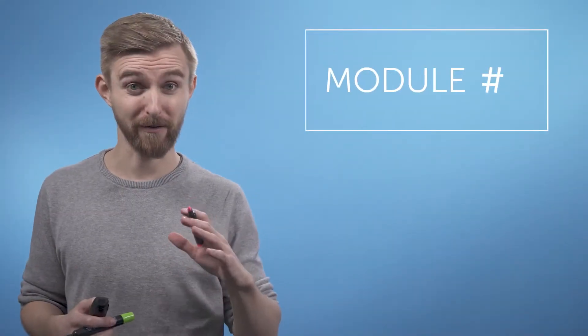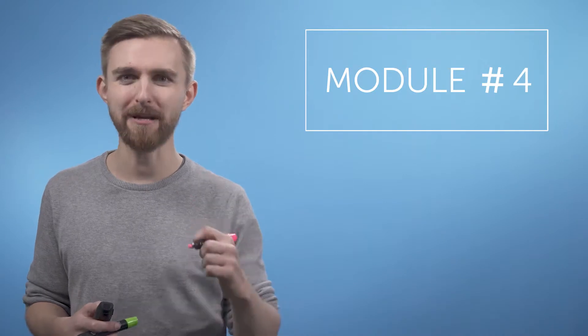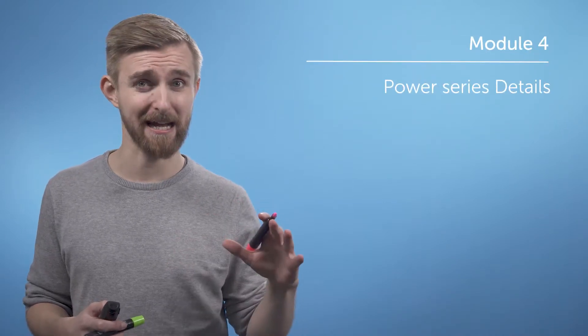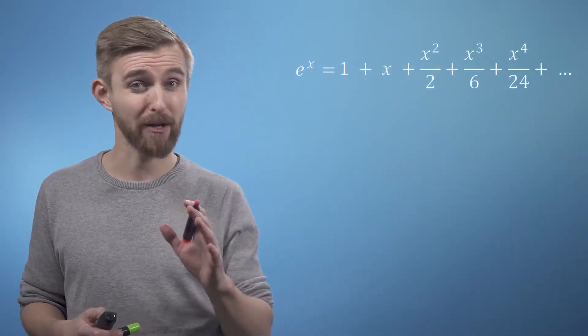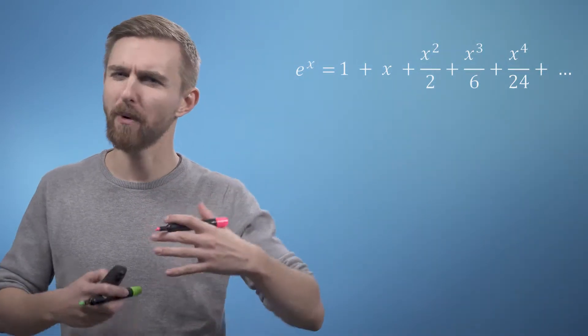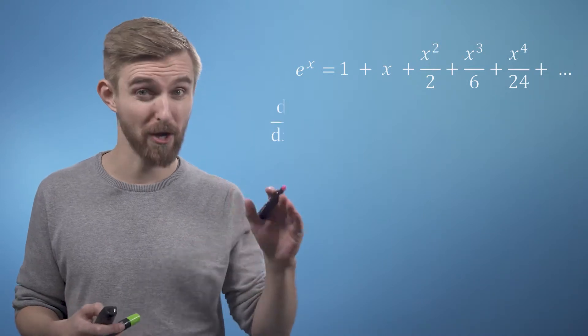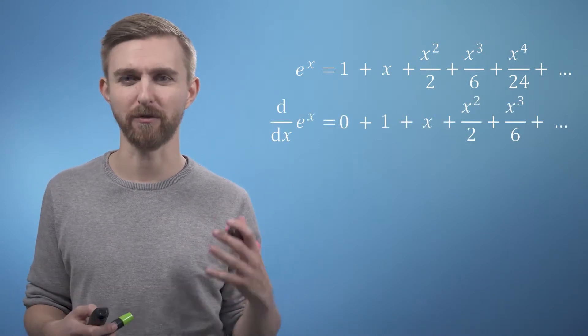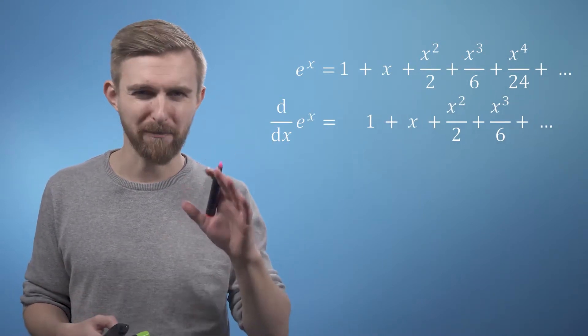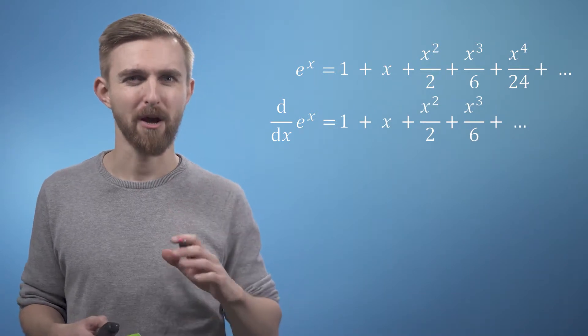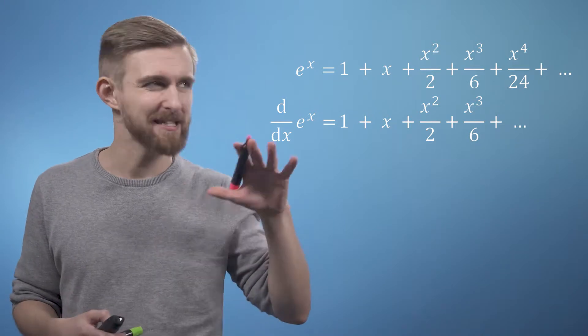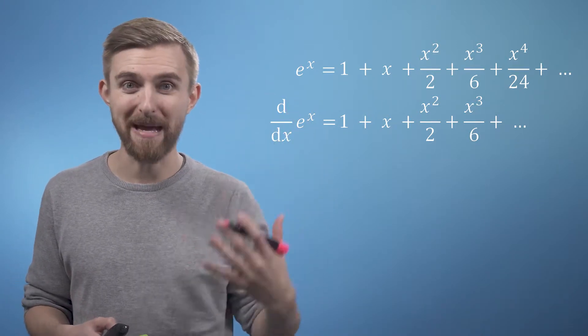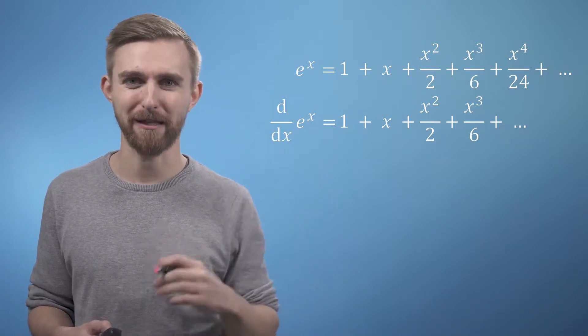I began our last session by trying to motivate you with the fact that we can re-express the function e^x as a power series. So I want to make sure that your mind is well and truly blown by showing you that when we differentiate this function term by term, which isn't very difficult to do as it's just a polynomial, something rather satisfying happens. Just as we'd expect for the derivative of e^x, this infinitely long series remains unchanged, which I think is pretty awesome.